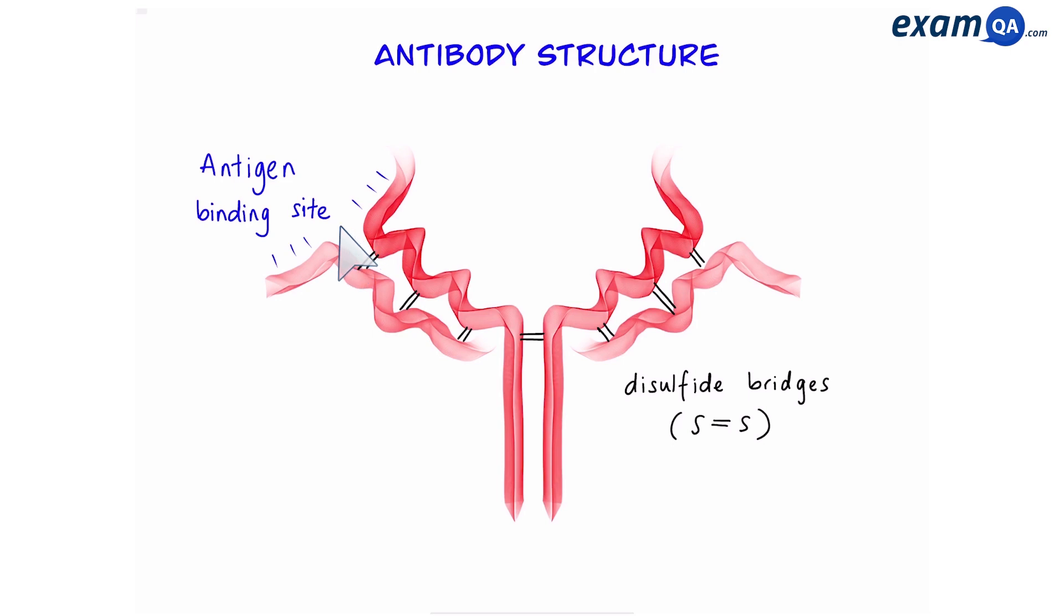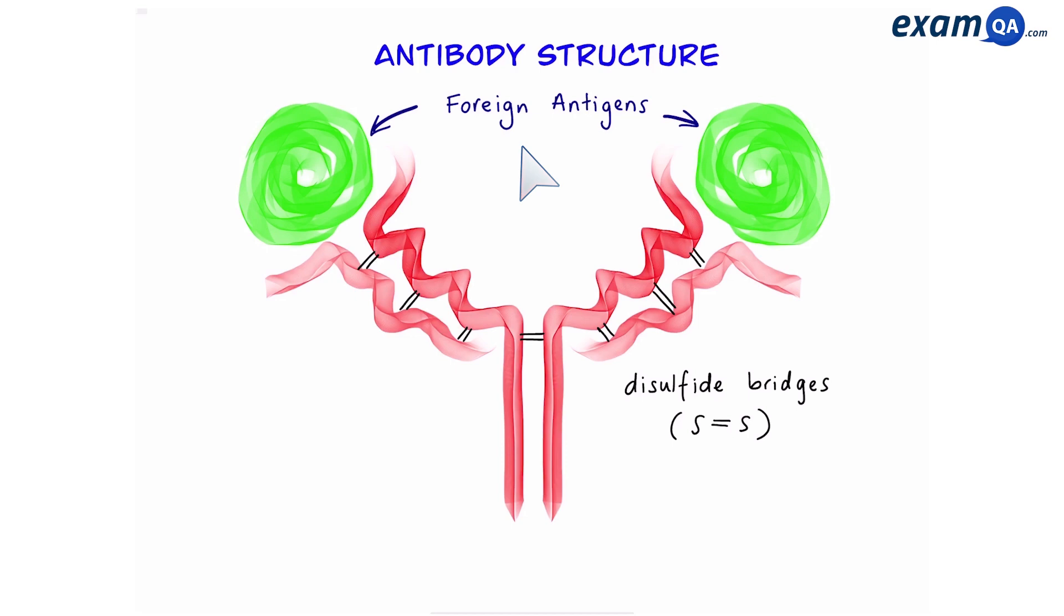This area is known as the antigen binding site. Every antibody has two of these. That means one antibody can bind to two antigens at the same time. What we have here is an antigen-antibody complex.